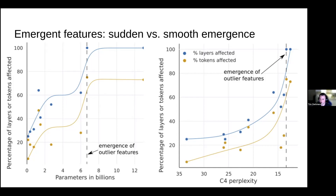On the right, we look at models in terms of perplexity. It's important to keep in mind that model size is not necessarily predictive of perplexity — for example, GPT-2 models are undertrained, whereas Chinchilla was trained on much more data than GPT-3, so while it's smaller, it has lower perplexity. When we look at perplexity instead of model size, we actually see a smooth transition. This is a very important finding because it means we can detect emergence early — by looking at small models and tracking how these properties change, we can predict if some properties might be emergent or not.